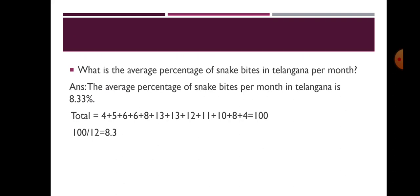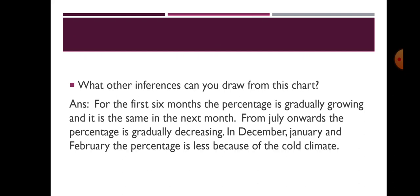The sum comes to 100, and this 100 should be divided by 12 months, giving us 8.33 percent. The next question is: what other inferences can you draw from this chart? For the first six months the percentage is gradually growing, and from July onwards the percentage is gradually decreasing. In December, January, and February the percentage is less because of the cold climate. The maximum number of snake bite cases — nearly 12.5 percent — were recorded during the monsoon season.